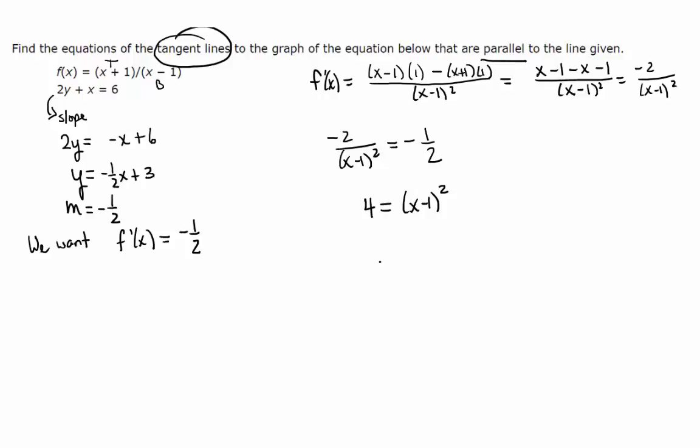We have 4 equals x minus 1 squared. Now we're going to use the square root property. So x minus 1 squared is 4. So x minus 1 must be plus or minus 2. So we're going to have x either equals positive 2 plus 1, which is 3, or negative 2 plus 1, which is negative 1.